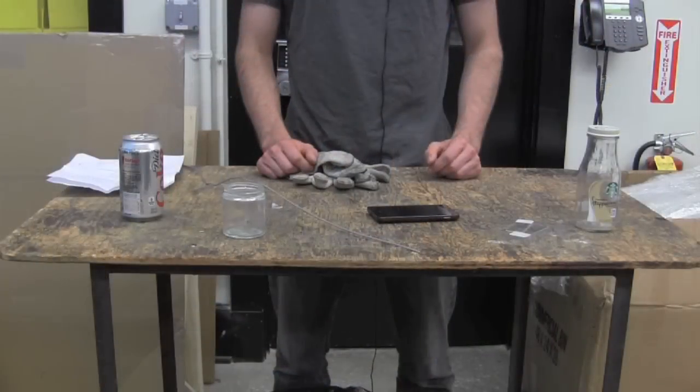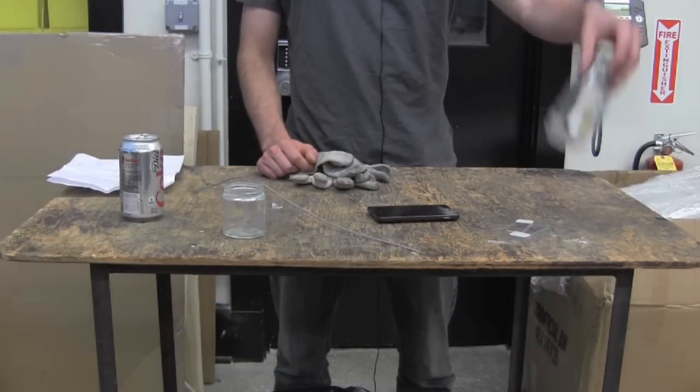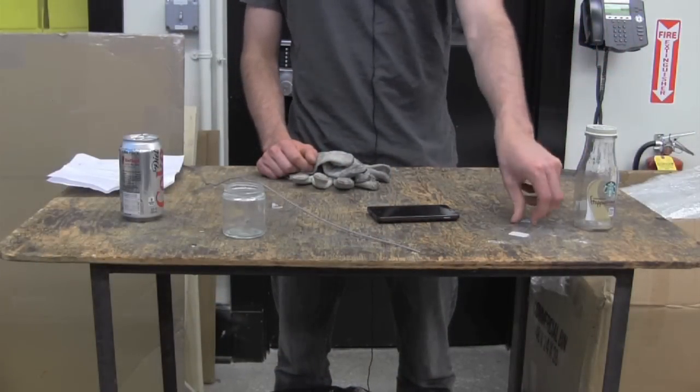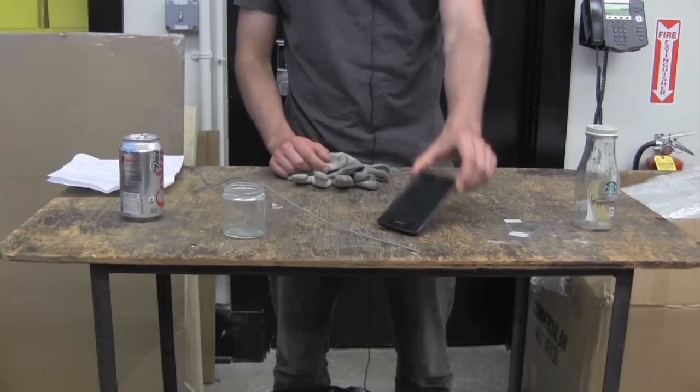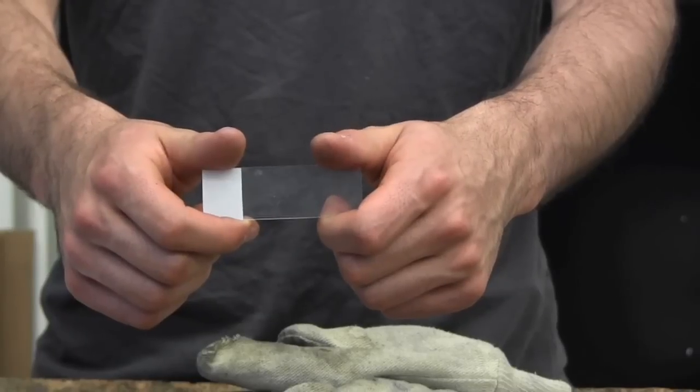Nowadays, glass is a common engineering material, used in everything from bottles to microscope slides to the screen on your smartphone. It's especially useful because it is transparent to visible light.